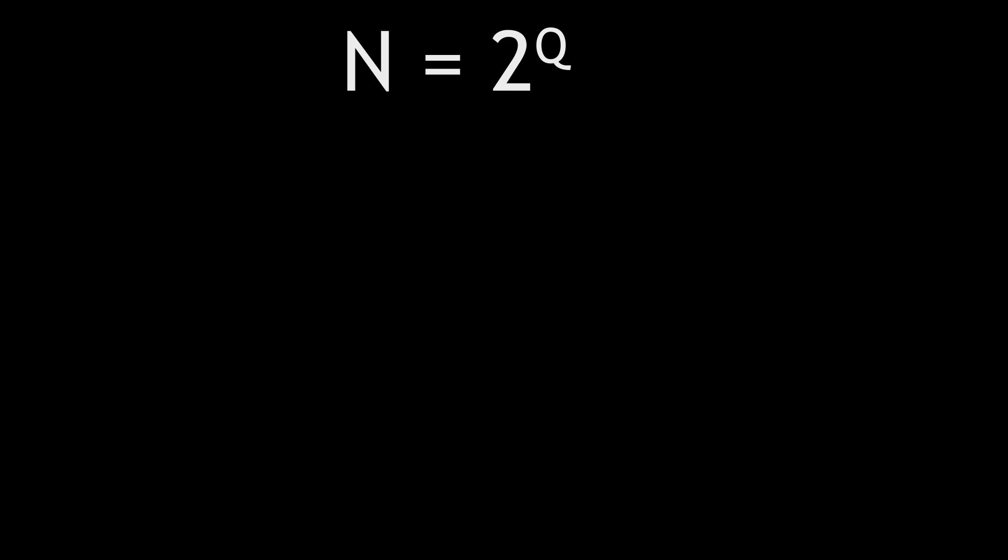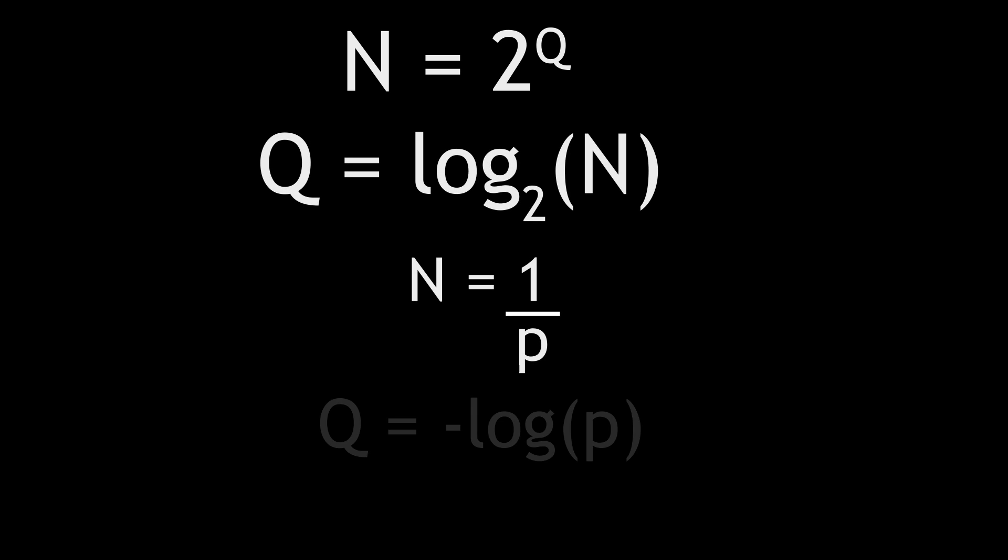This is in fact what we calculated previously. We took the probability of each event and multiplied it by the number of questions that needed to be asked. But the number of events, n, at each level, is equal to 2 to the power of the number of questions asked. But it's also equal to 1 over the probability. So we can rearrange for the number of questions, Q, which is equal to log base 2 of 1 over the probability, or minus the log of the probability.